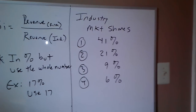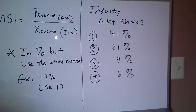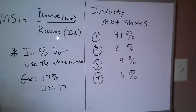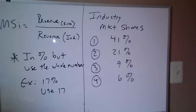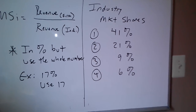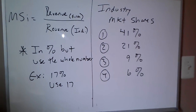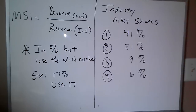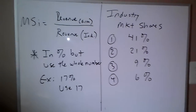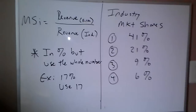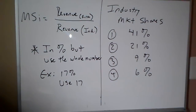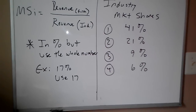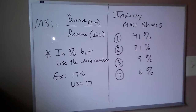Here's an example of a hypothetical industry with market shares. Firms 1, 2, 3, and 4 are the top four firms in the industry. Firm 1 has 41%, firm 2 has 21%, firm 3 has 9%, and firm 4 has 6%. If we want the CR4 level, you simply sum these four numbers and it comes out to 77. So the CR4 of this industry is 77. If asked for a CR8 and there were eight firms listed, you would simply sum up firms 5 through 8 — it's literally that simple.